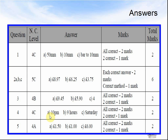Number 4: 10pm in the afternoon, closing at 10pm. Number 4B: 9 hours. C: Saturday. Question 5: A was £1.50. B was £1. C was £6.